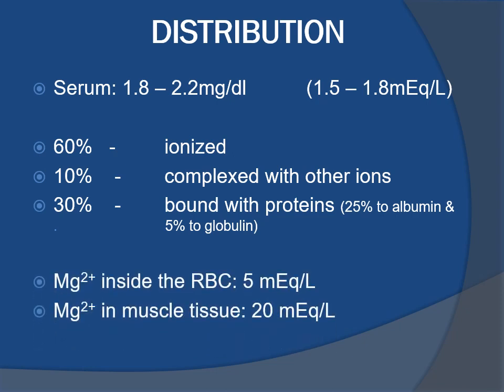The concentration of magnesium inside the red blood cells is 5 milliequivalents per liter, and the concentration of magnesium in muscle tissue is 20 milliequivalents per liter.